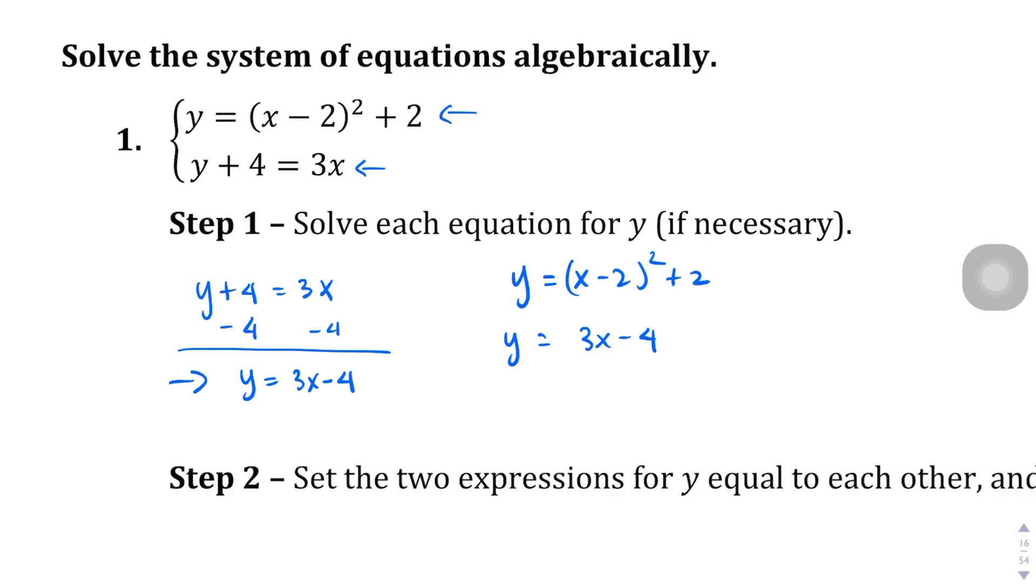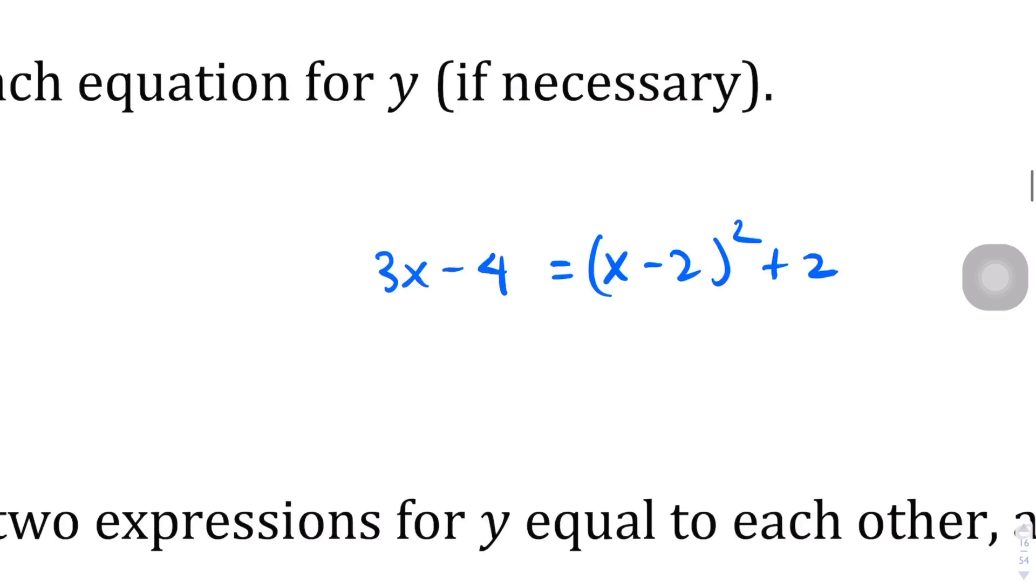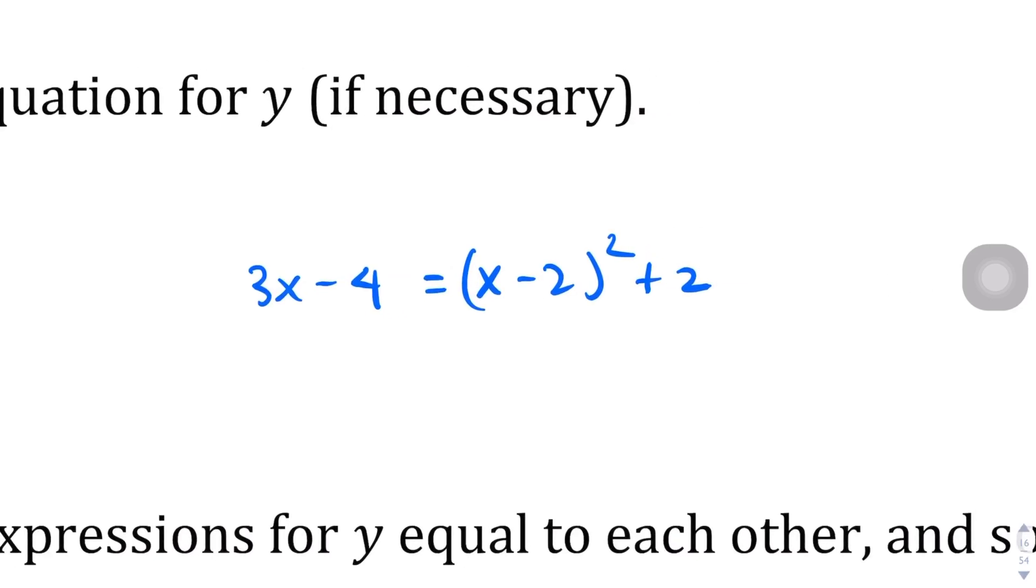And here's what I want us to observe. They both have a y equals, right? And the reason why that's important is because now what I can do, since they are both equal to y, let me manipulate this a little bit here. Since they're both equal to y, I can actually get rid of this guy and just say this: y is equal to both 3x minus 4 and x minus 2 squared plus 2. Or if we further simplify it, just this: 3x minus 4 equals x minus 2 squared plus 2.